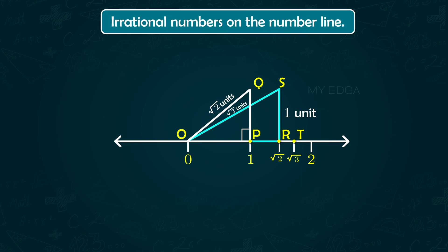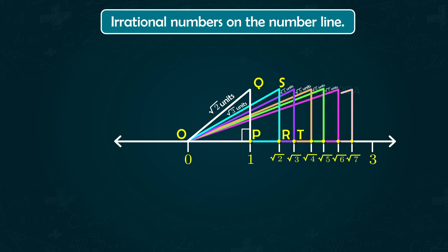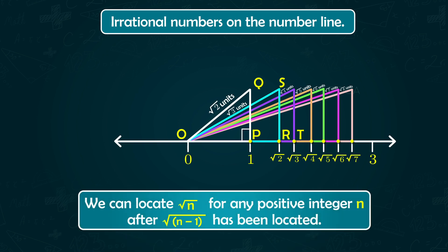In the same way we can plot √4 that is 2, √5, √6, √7, etc. on the number line. In the same way we can locate √n for any positive integer n after √(n-1) has been located.